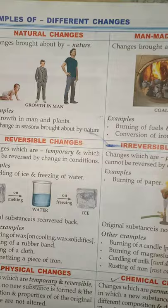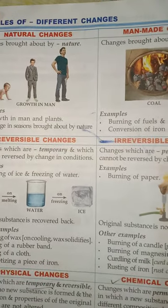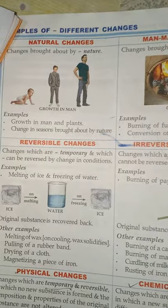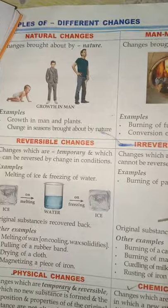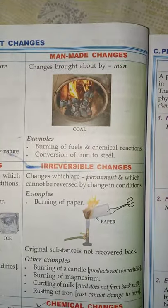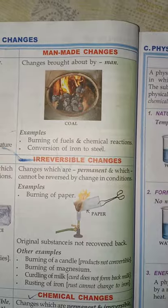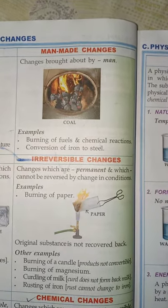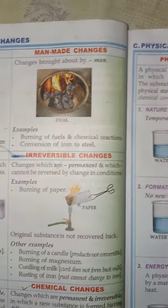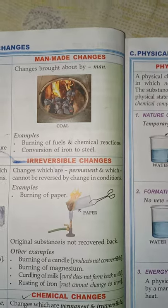We are having a difference between natural and man-made changes. Those changes which are caused by nature are known as natural changes, like growth of a human being from an infant to an adult, and changing of seasons brought about by nature. Man-made changes are those brought about by man — for example, burning of fuels or chemical reactions, conversion of iron to steel.